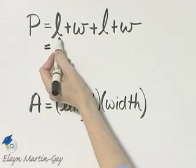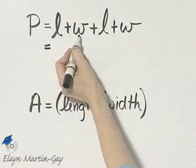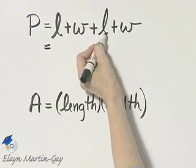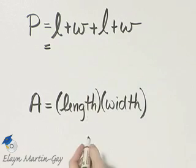I'm using P to stand for that. We would find length plus width plus length plus width, and that would be the distance around.